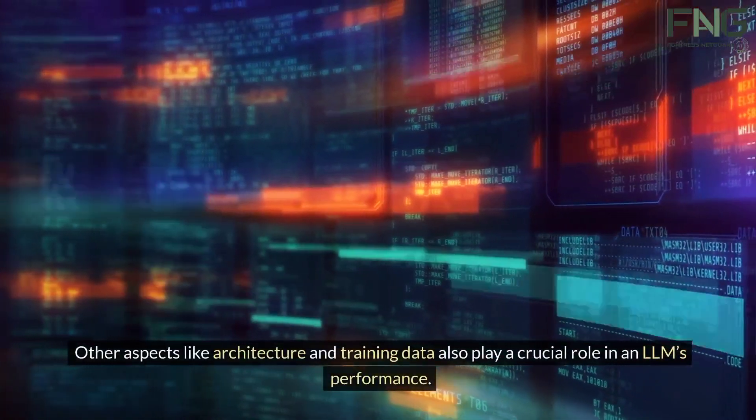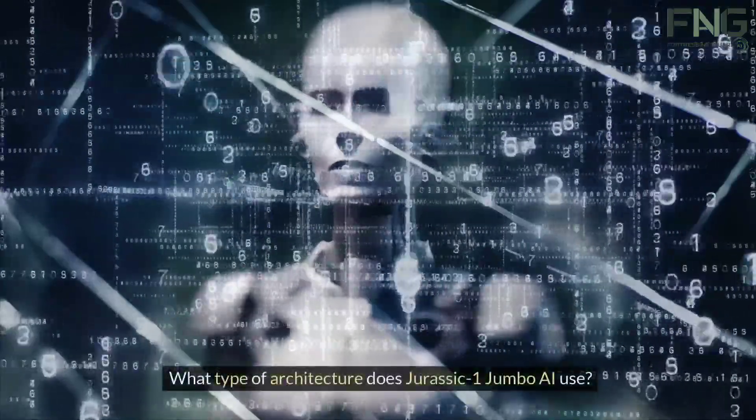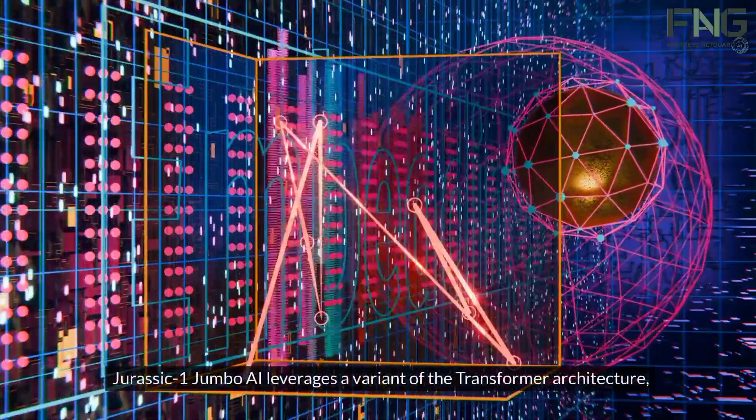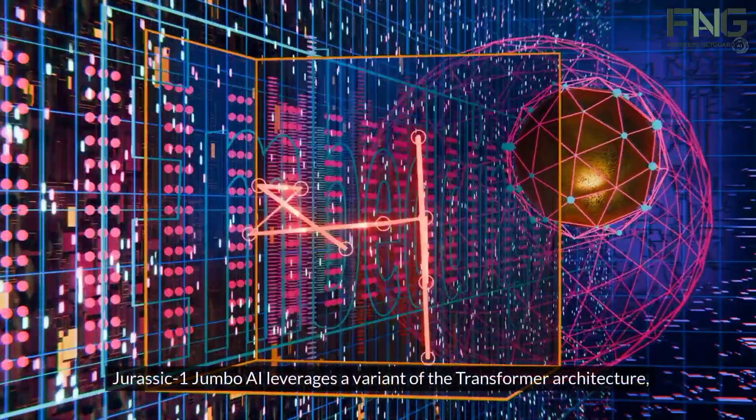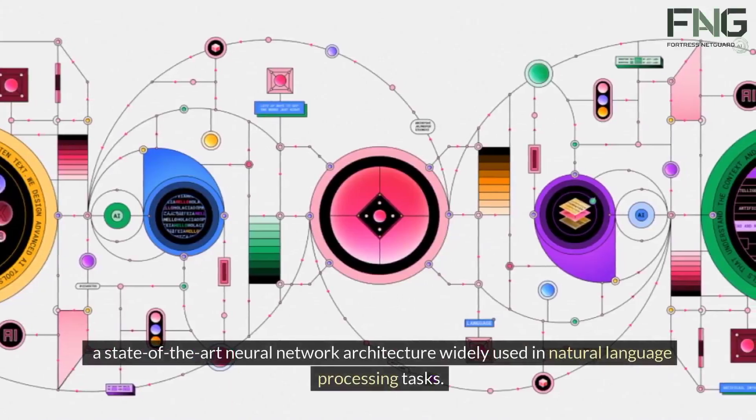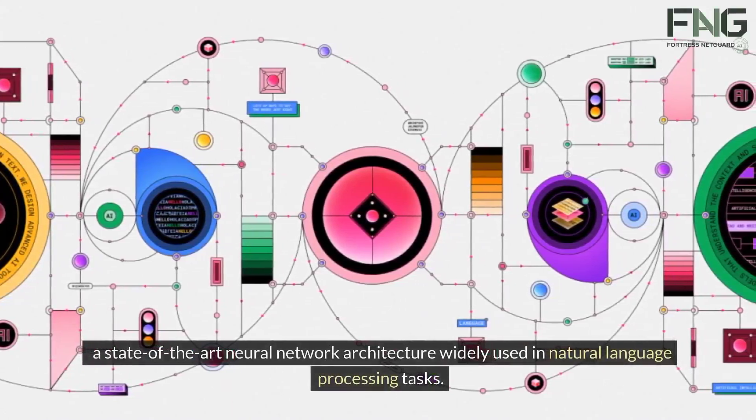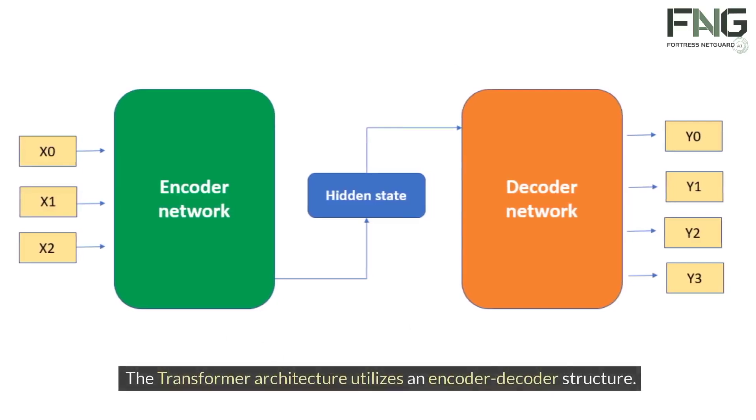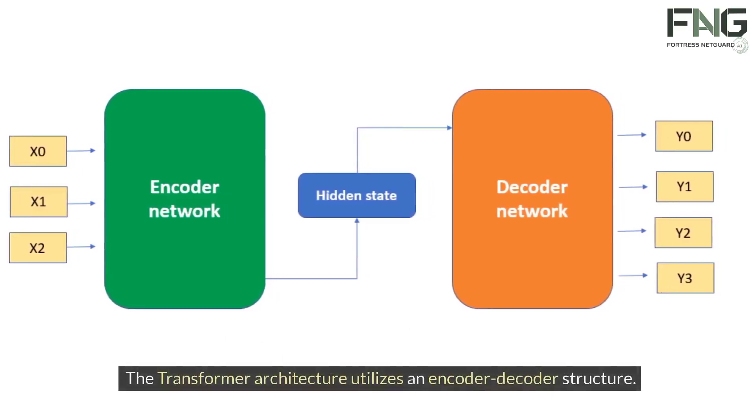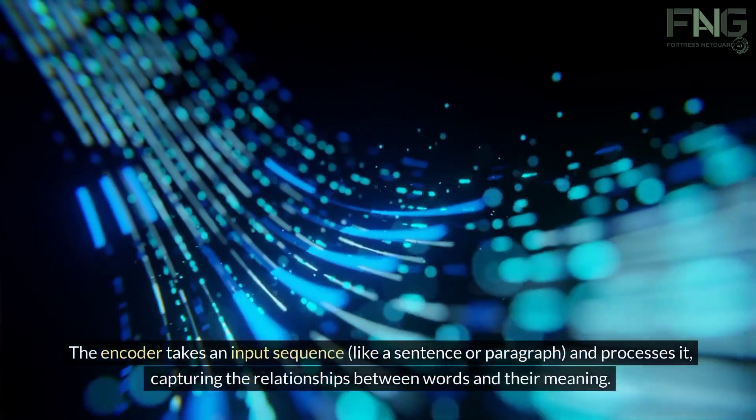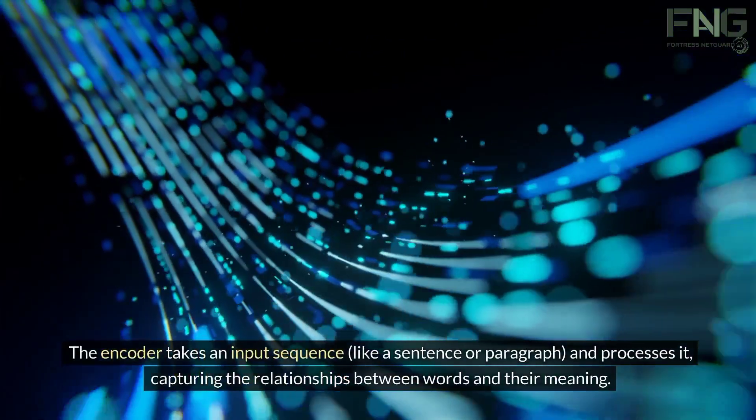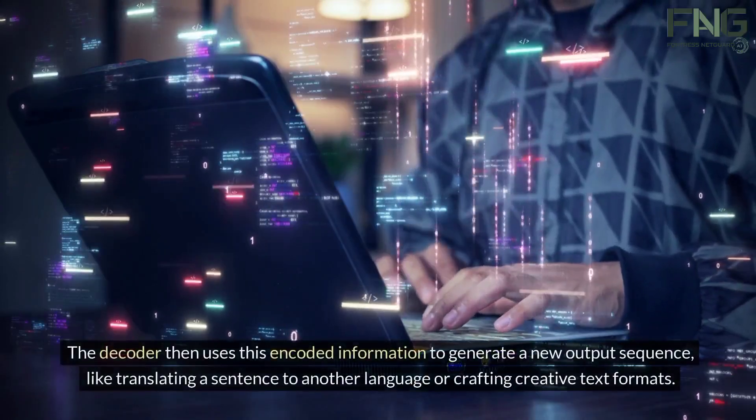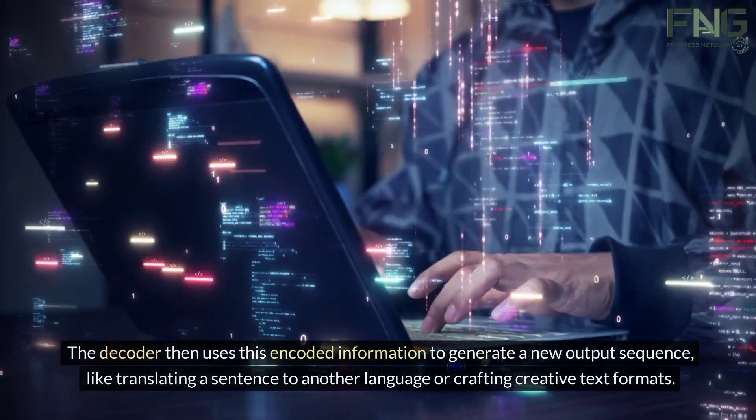What type of architecture does Jurassic-1 Jumbo AI use? Jurassic-1 Jumbo AI leverages a variant of the transformer architecture, a state-of-the-art neural network architecture widely used in natural language processing tasks. Here's a breakdown of the key components: The transformer architecture utilizes an encoder-decoder structure. The encoder takes an input sequence like a sentence or paragraph and processes it, capturing the relationships between words and their meaning. The decoder then uses this encoded information to generate a new output sequence, like translating a sentence to another language or crafting creative text formats.